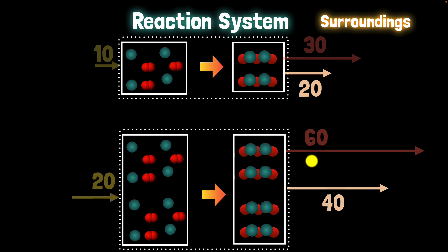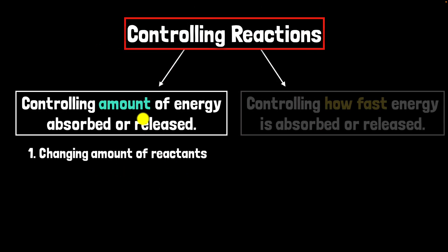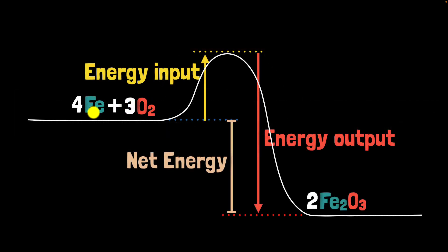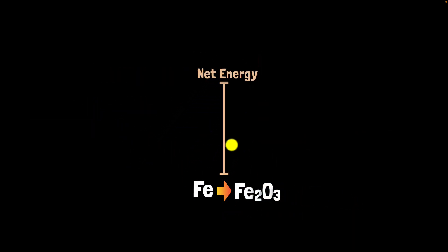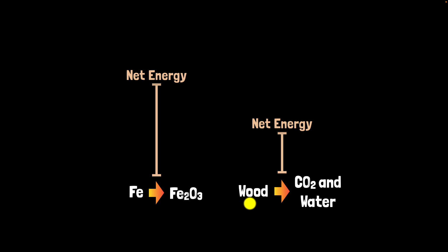Changing the amount of reactants is one way to control energy absorbed or released. Another way is to use a different substance altogether. Different substances have different structures, so their energy levels differ, and the amount of energy released will differ too. For example, compared to iron, burning wood releases less energy because the structures are different.